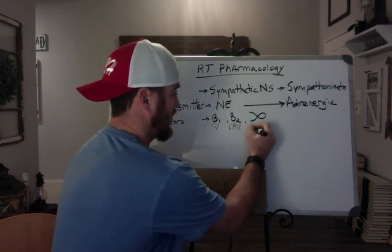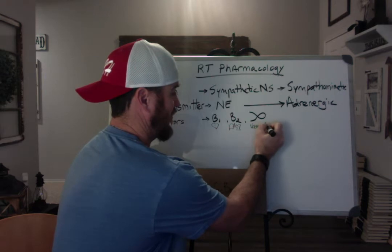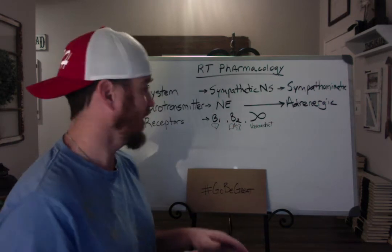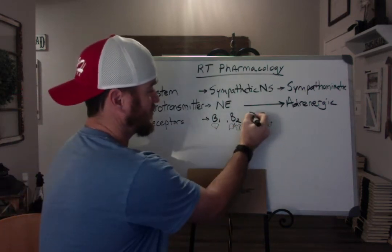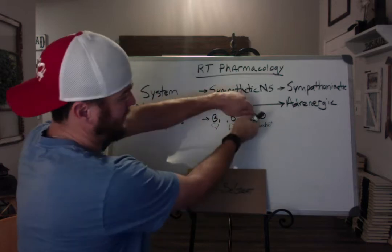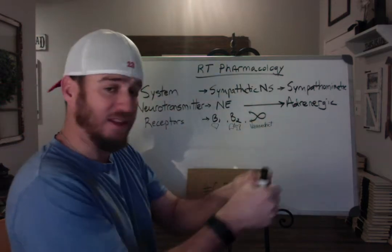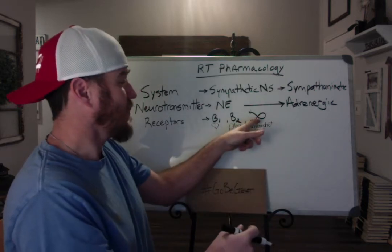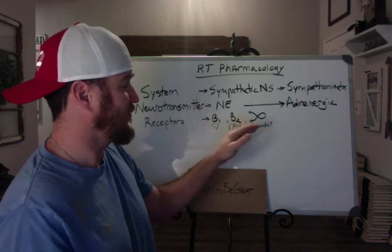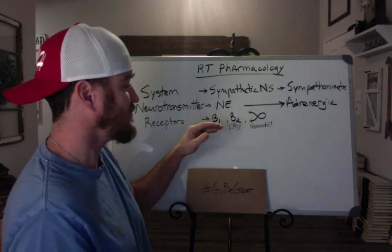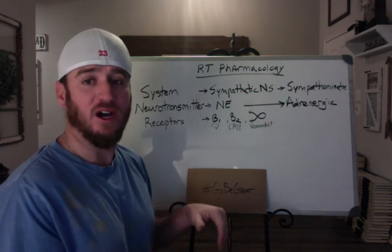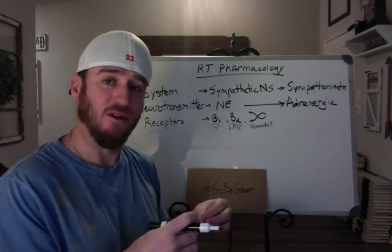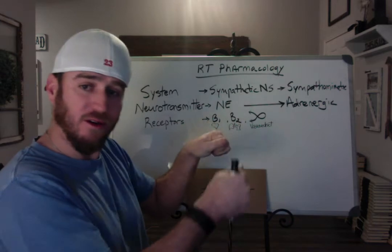Alpha is our vasoconstricting property. To remember that, imagine this was a piece of rope or twine and you pulled it in opposite directions — that circle would get smaller and become tight. If you give a drug that affects the alpha receptors, it will cause vasoconstriction, making the vessels get smaller by pulling on those two opposite ends.